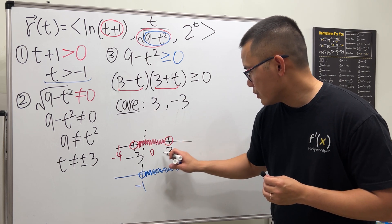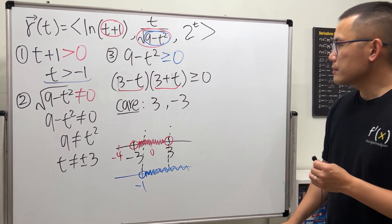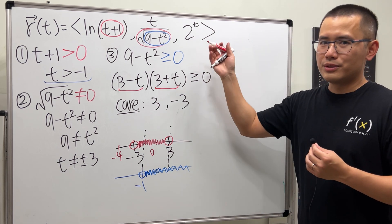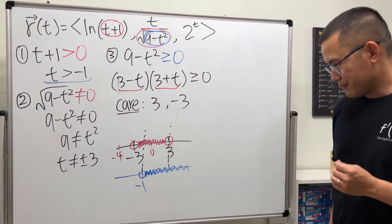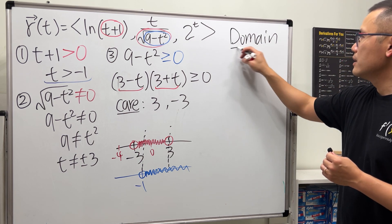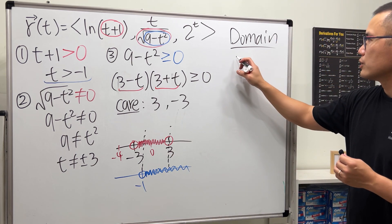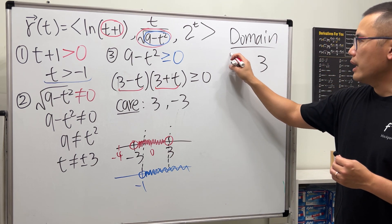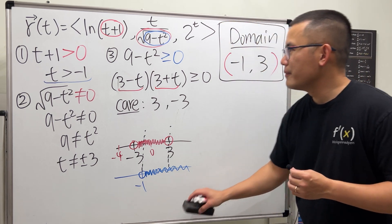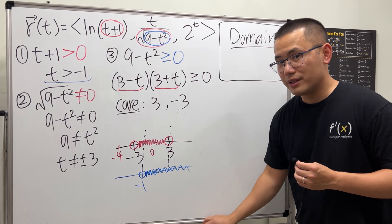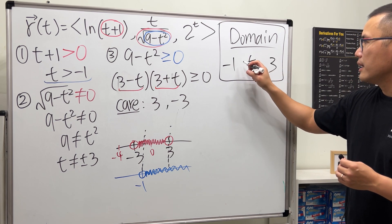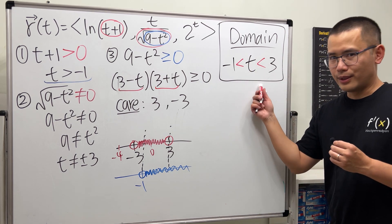Now combining all conditions: t greater than negative one from condition one, and the interval from negative three to three open from the square root condition. The overlap is from negative one to three, not including the endpoints. By the way, for the component 2 to the t, the domain is all real numbers, so that doesn't add any restriction. Therefore, the domain of this function is negative one less than t less than three — do not include the end values.